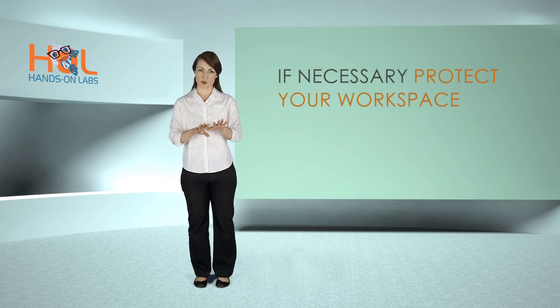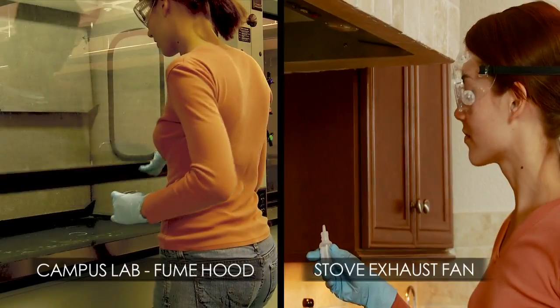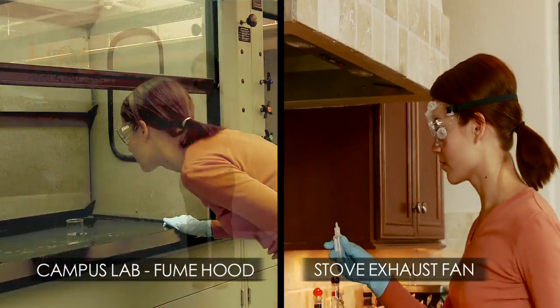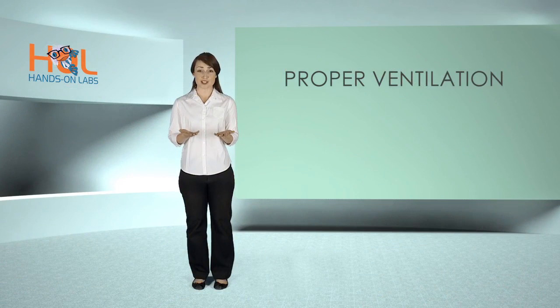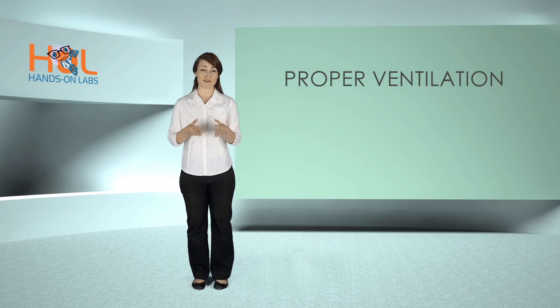Protect your work table or surface by covering it with plastic sheeting or a white garbage bag. An open window or stove exhaust fan are adequate to provide proper ventilation. Certain chemicals have noxious fumes that can be dangerous if inhaled in sufficient quantities, and flammable vapors can become explosive if allowed to accumulate in an enclosed space.